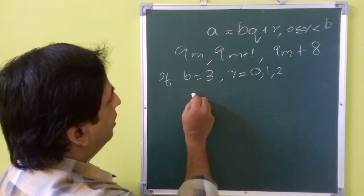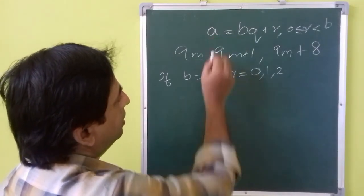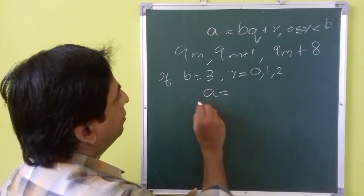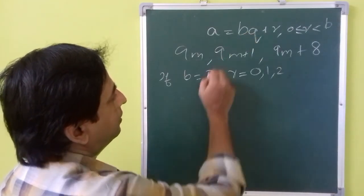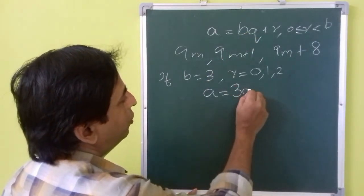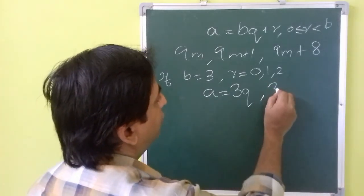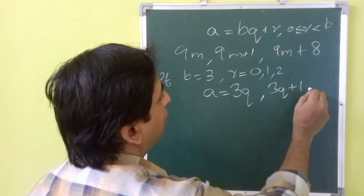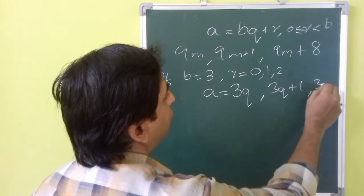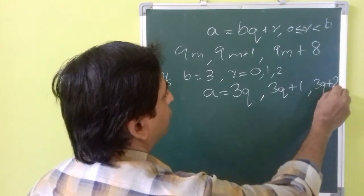Now we can take any positive integer a. It can be 3q, since b is 3, that means it can be 3q plus 0 which is 3q itself. The next is 3q plus 1, or 3q plus 2.